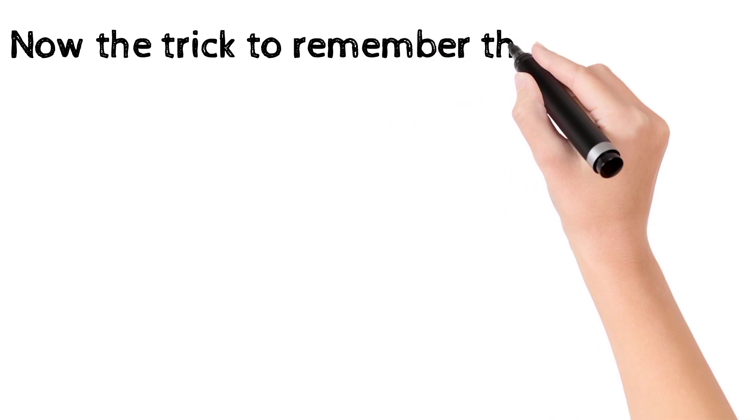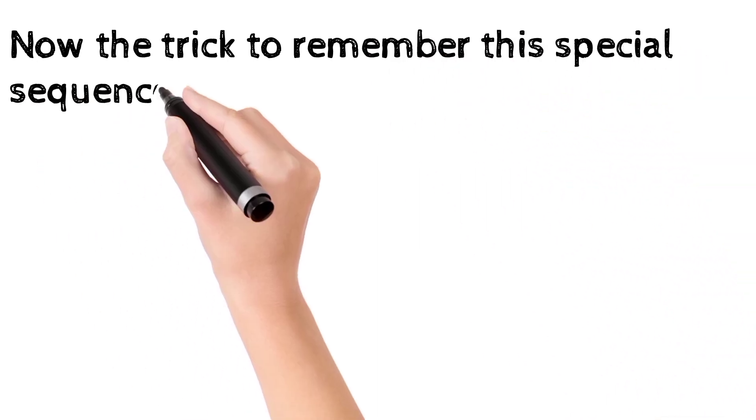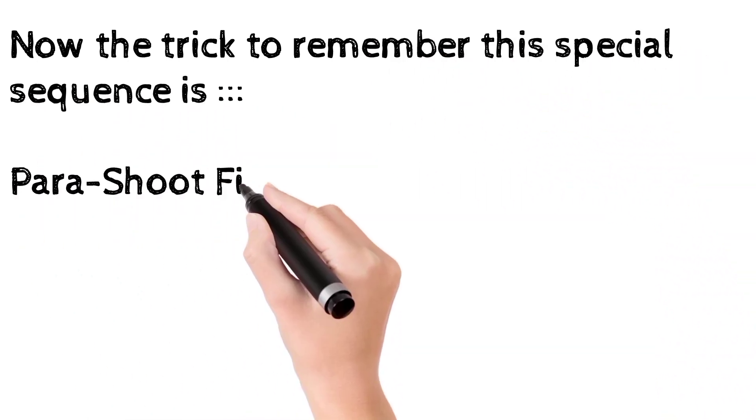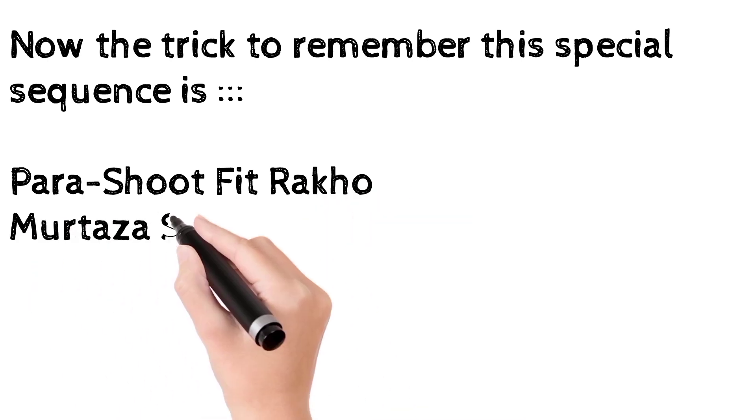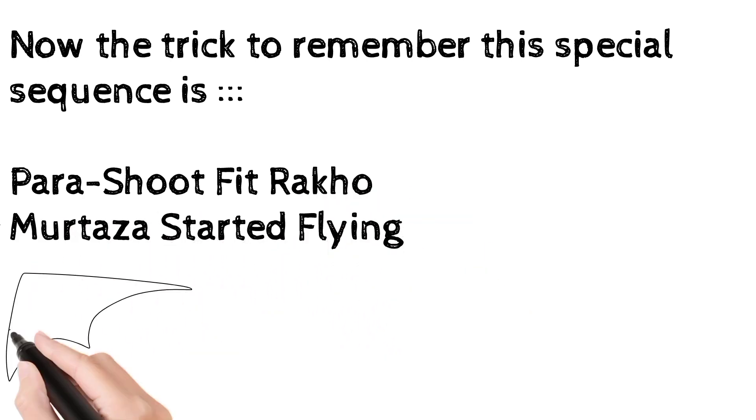Now, we will discuss the trick. This special sequence: parachute fit rakho, Murtaza started flying.